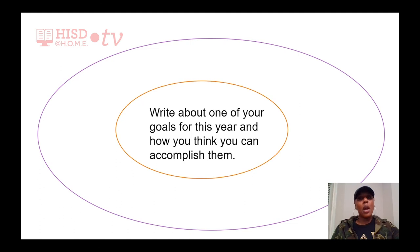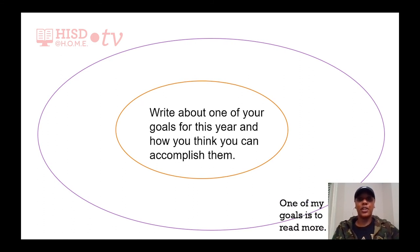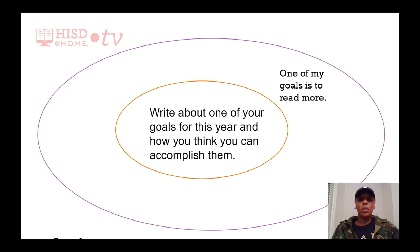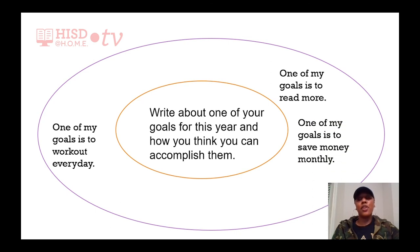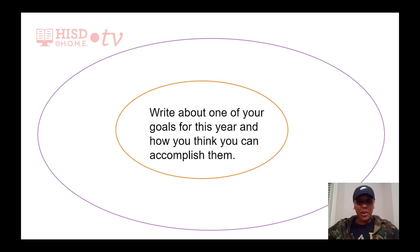Our prompt is to write about one of your goals for this year and how you think you can accomplish them. On the outside of our circle, we're going to come up with some ideas. I'm going to come up with some goals I have for myself: read more, work out every day, and save money monthly. From there, choose the best topic that you will really be able to write on — one that you can elaborate on and explain how you're going to achieve it. Draw this graphic organizer and on the outside circle, come up with some different goals you have for yourself this year.